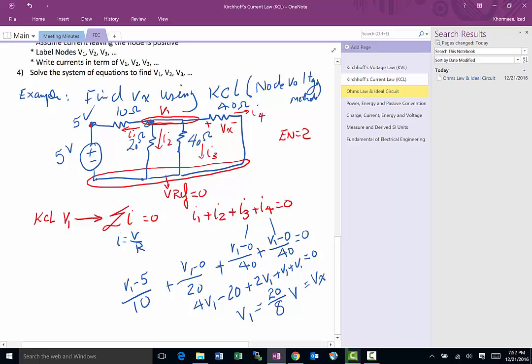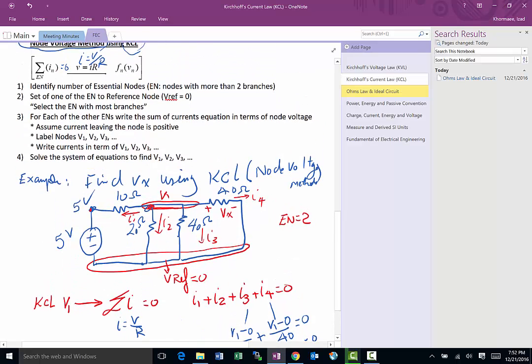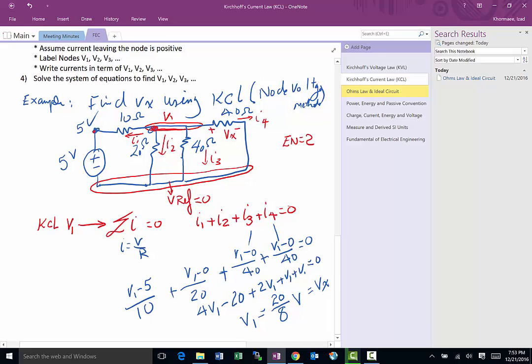Again it's really important that when you're doing this you find out what all the essential nodes are - essential nodes where more than two branches come together. Then you write the sum of currents for every node except for the reference, the one you picked and called zero. And then you solve it. Once you have a system of equations you solve it and there is your answer.